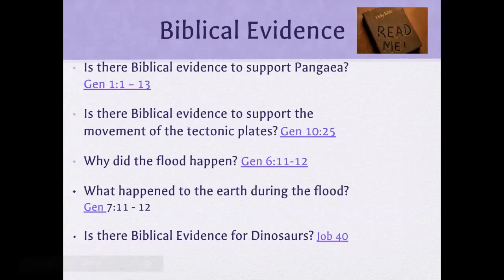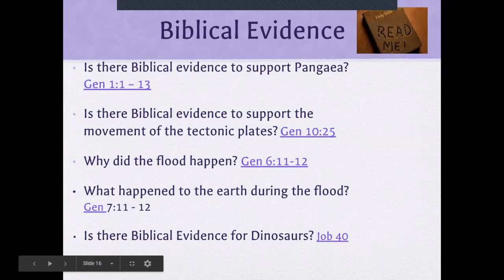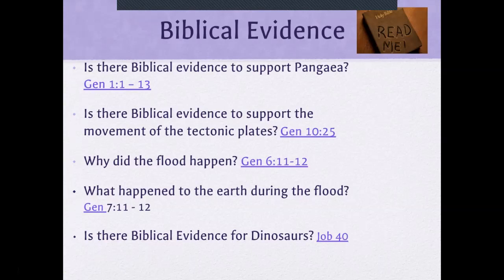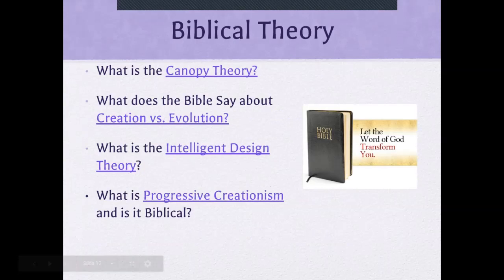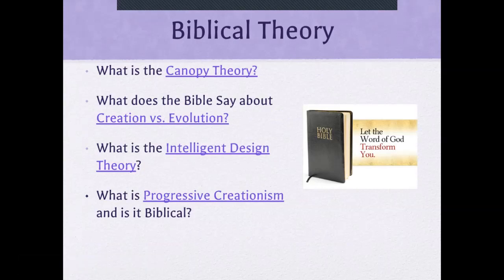And is there biblical evidence for dinosaurs? Job 40 talks about this animal with a thick tail like a massive tree — and we certainly know of some dinosaurs that had massive tails. They didn't talk directly about dinosaurs in the Bible outside of this verse, but this could have been speaking to a dinosaur that existed at the time. There are also some additional ideas around the canopy theory, why the earth could have been so warm, as well as intelligent design theory and progressive creationism — the idea that God could have created the world progressively, not all at once.